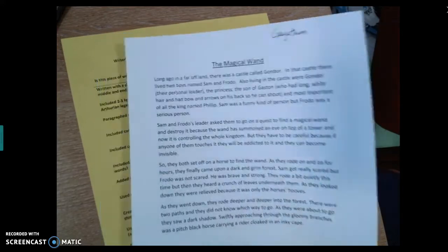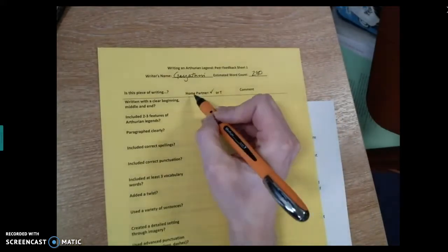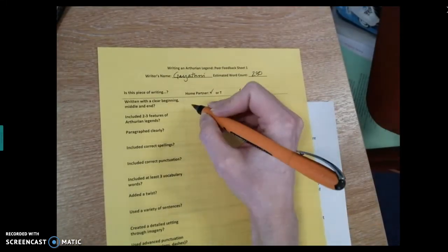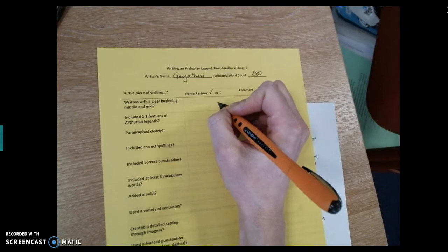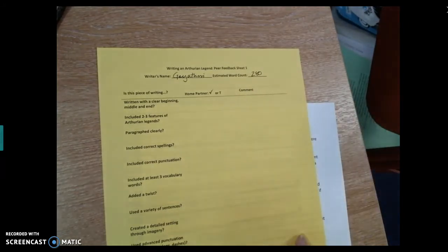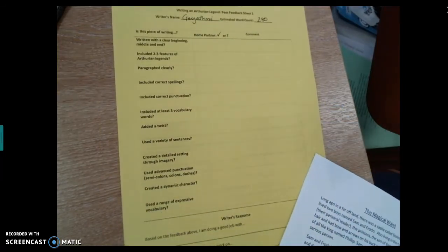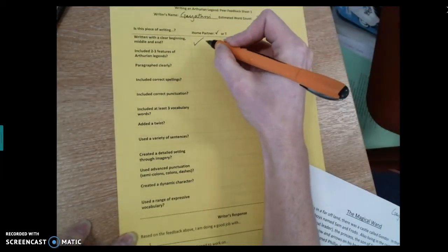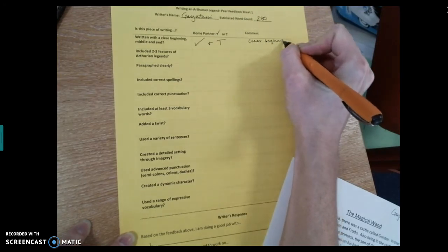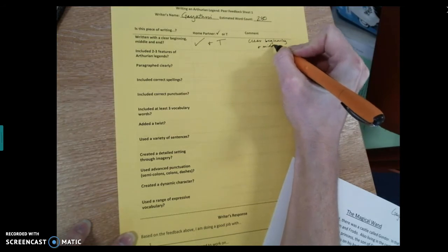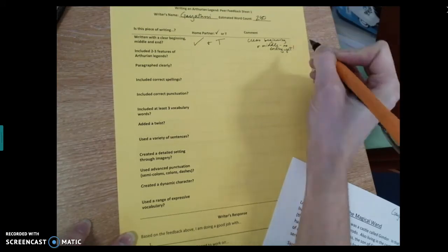Okay, so now I'm going to come to the sheet. Gayathri's home partner is going to fill in this side. You can see it says home partner right here. The home partner is going to put a tick if Gayathri has done whatever it says here, and a T for target if she needs to work on that bit. And if they want, they can put a comment here in this side. So I'm going to work my way through it. Okay, does Gayathri have a clear beginning, middle, and end? I'm going to put tick and T. Clear beginning and middle. No ending yet because she hasn't finished it. So we know she needs to work on that ending.